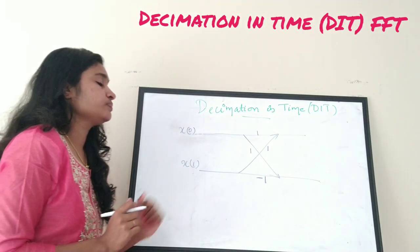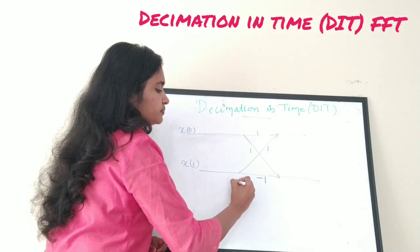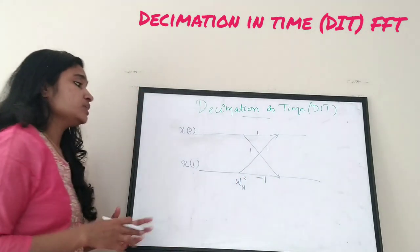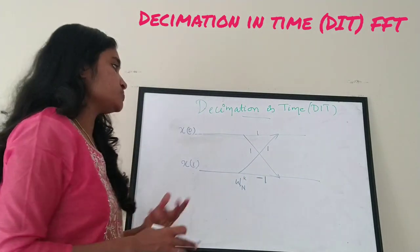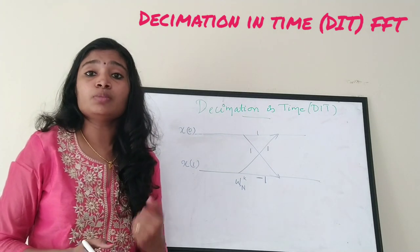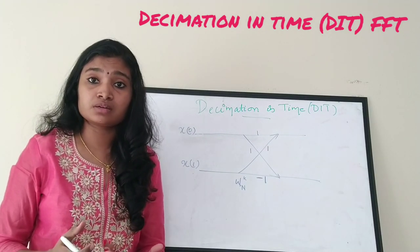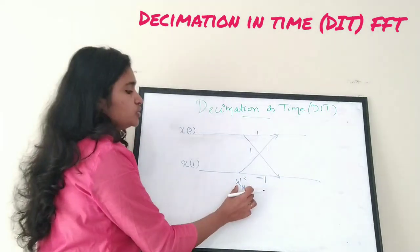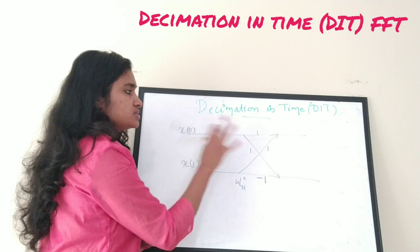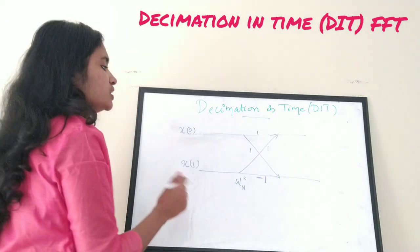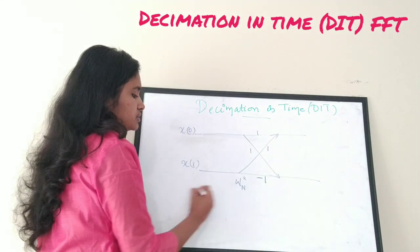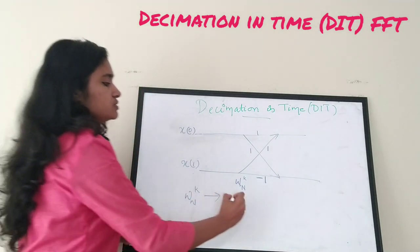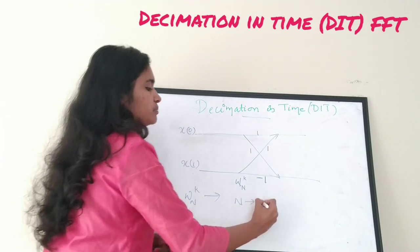There is a twiddle factor. We have already discussed twiddle factors in earlier videos. If you are not familiar with the twiddle factor concept, please watch the earlier videos. I'm going to represent this as W_N raised to k, since this is a general butterfly diagram. The N denotes the number of inputs.